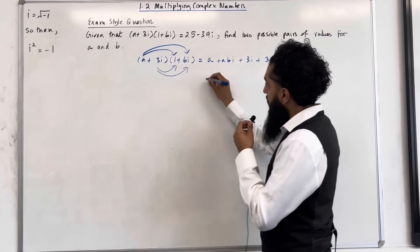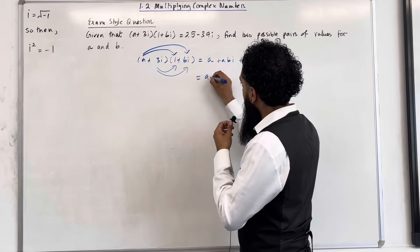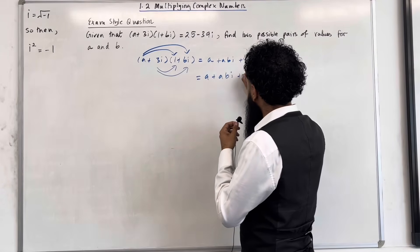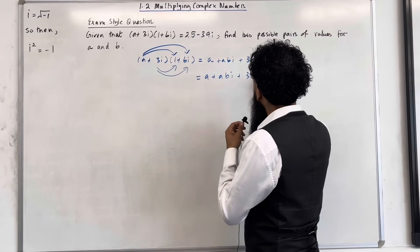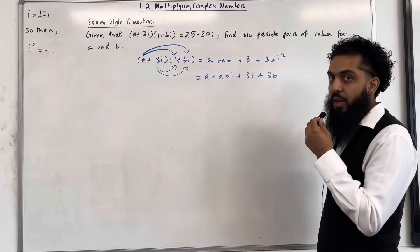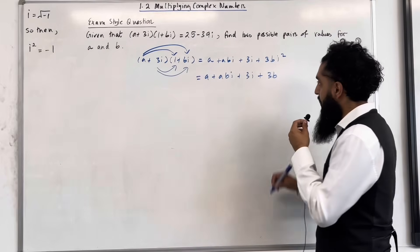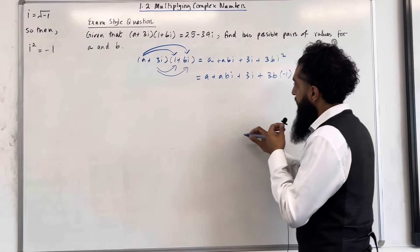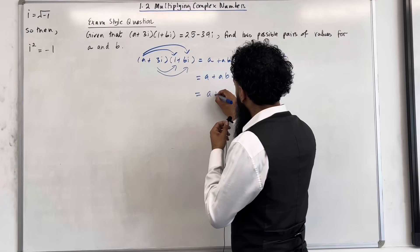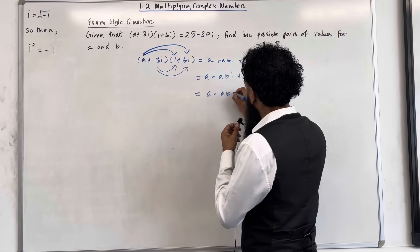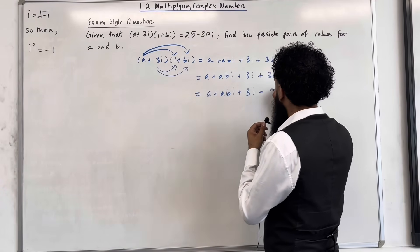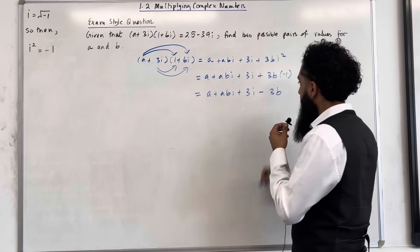So I've got a plus abi plus 3i plus 3b. i squared is minus 1, so 3b multiplied by minus 1 gives a plus abi plus 3i minus 3b.